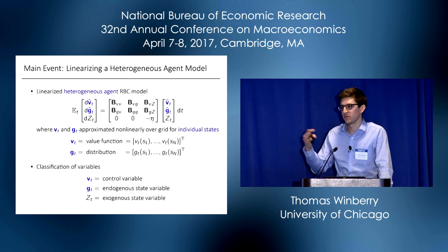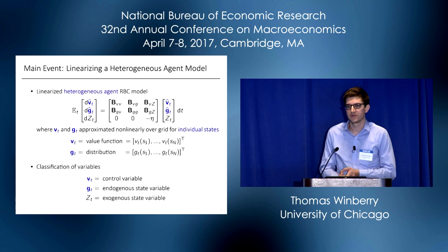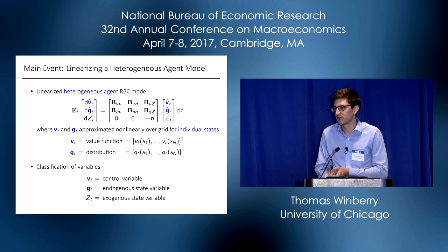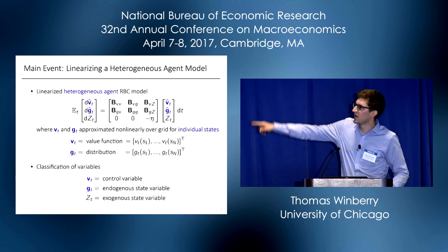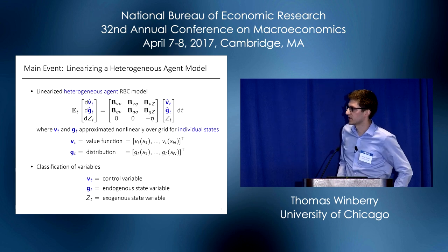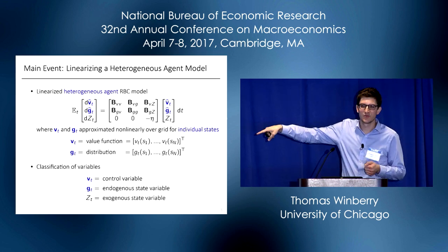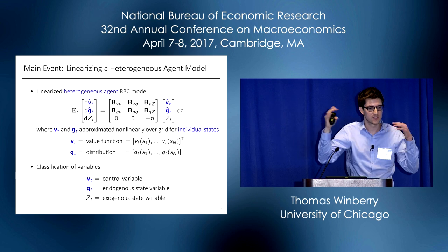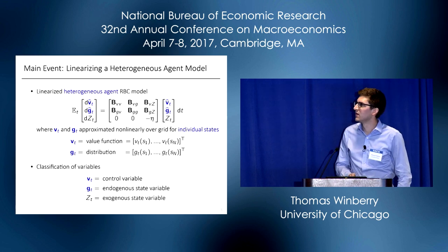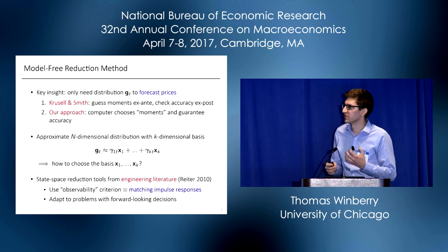In small models like the original Krusell-Smith model, N is something like 200 grid points (2 for idiosyncratic shocks times 100 for wealth), so the linear system has about 400 equations—very feasible to solve. In bigger models like our applications, N is something like 66,000, making the total linear system about 132,000 equations, which is not feasible to solve directly. So in the paper we develop what we call a model-free reduction method to reduce the size of that linear system while preserving accuracy.